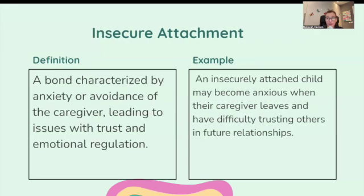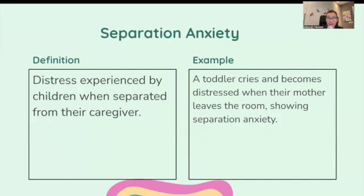Insecure attachment: a bond characterized by anxiety or avoidance of the caregiver, leading to issues with trust and emotional regulation. An insecurely attached child may become anxious when their caregiver leaves and have difficulty trusting others in future relationships. Separation anxiety is the distress experienced by children when separated from their caregiver — for example, a toddler who cries when their mother leaves the room.